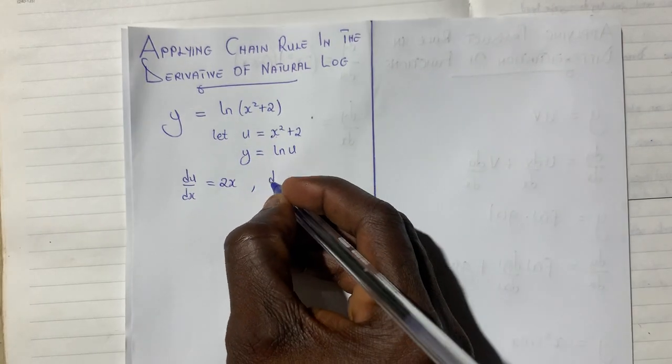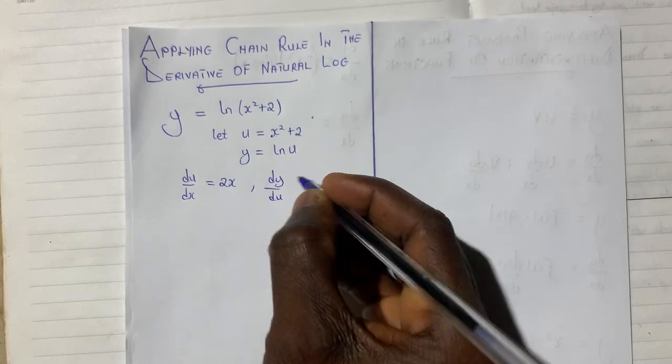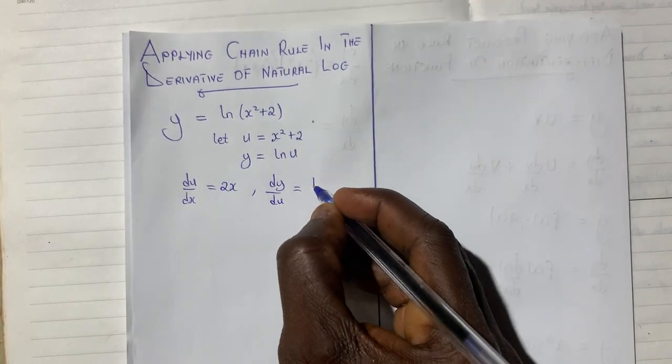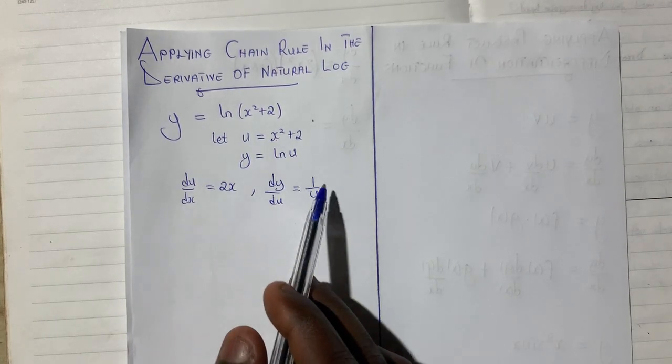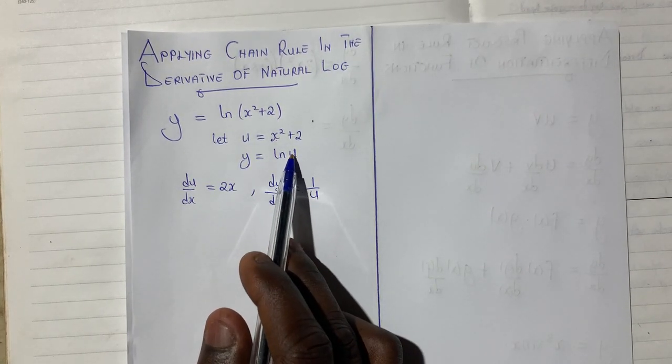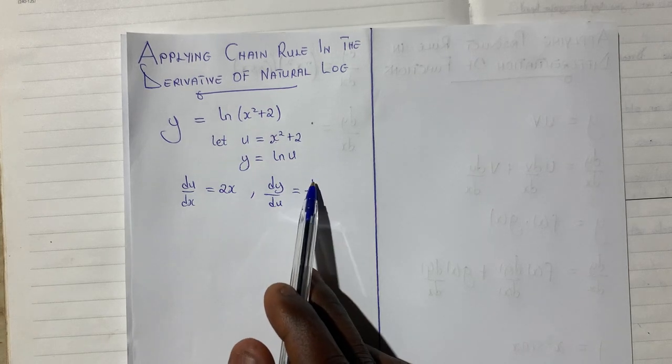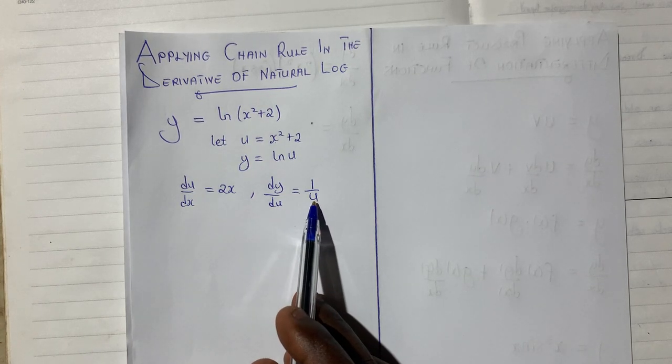When we differentiate this, dy du will produce 1 over u. Derivative of ln u will give us 1 over u. If this place is x, whatever variable it is, it is 1 over that variable or that letter.